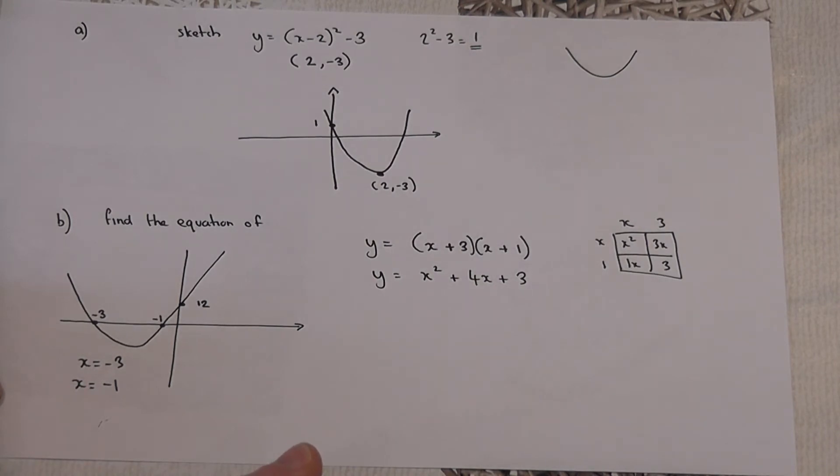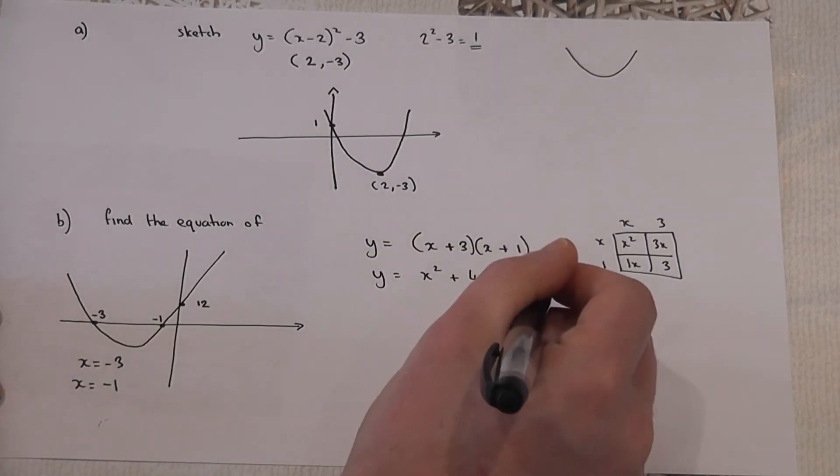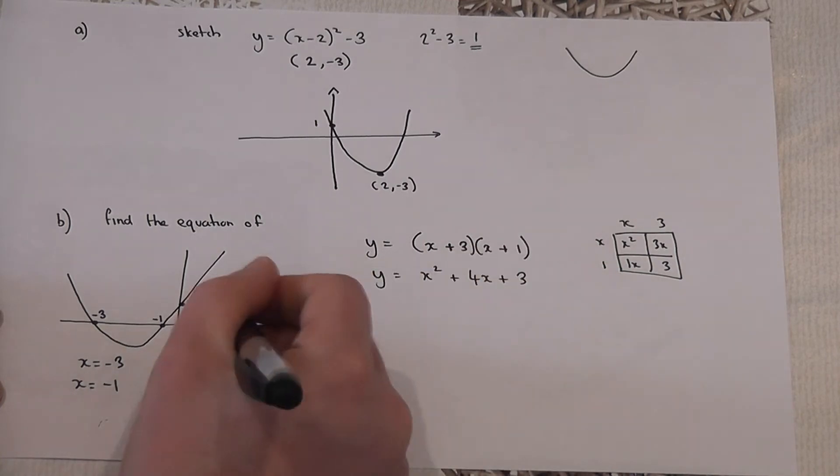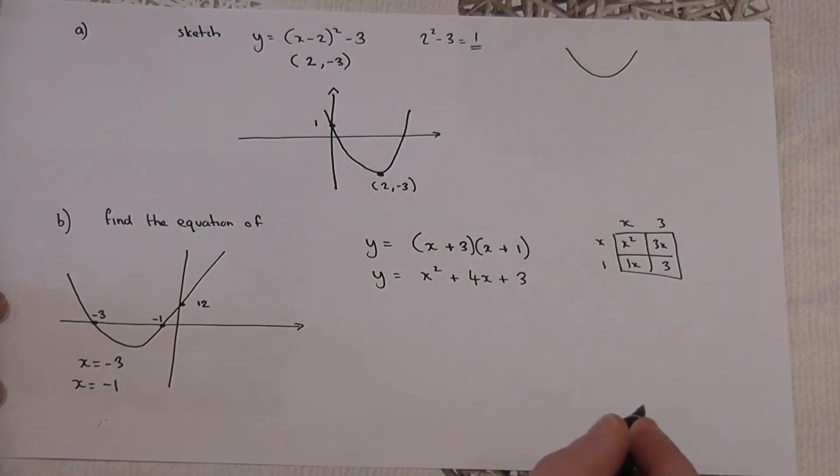However, this gives us the right roots but the y-intercept here is 12, and this number here should give the y-intercept. We've got a 3 rather than a 12. So to make the equation work, we have to scale this equation by a number to make it 12 rather than 3.